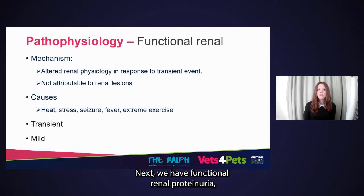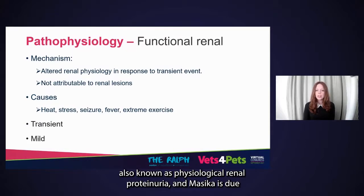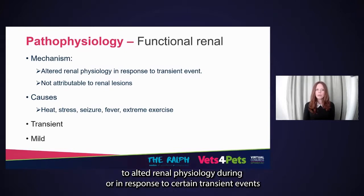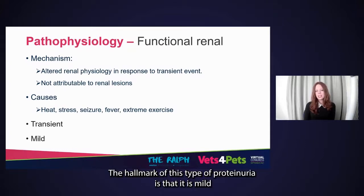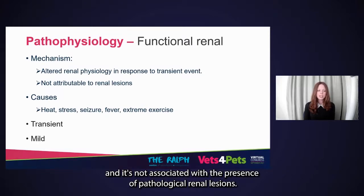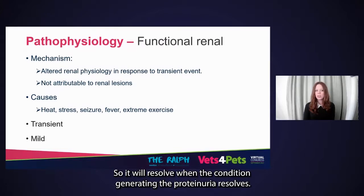Next, we have functional renal proteinuria, also known as physiological renal proteinuria. This occurs due to altered renal physiology during or in response to certain transient events such as strenuous exercise, fever, or stress. The hallmark of this type of proteinuria is that it is mild, and it is not associated with the presence of pathological renal lesions. It also tends to be transient, so it will resolve when the condition generating the proteinuria resolves.